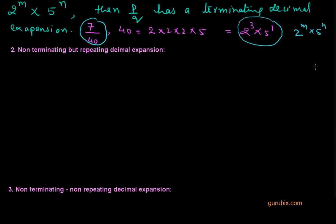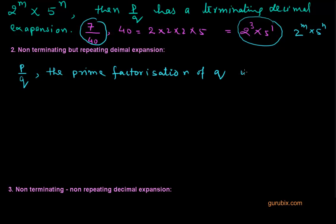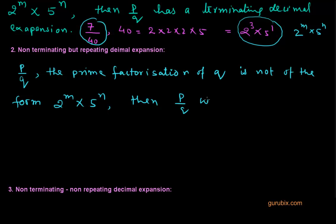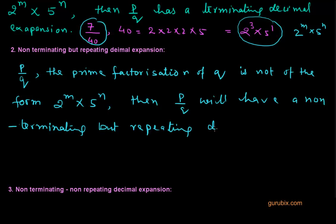Now let me come to the next part of this topic. Secondly, we have non-terminating but repeating decimal expansion. Suppose we have a rational number P over Q, and if we factorize Q, the prime factorization of Q is not of the form 2 to the power M multiplied by 5 to the power N. Then P over Q will have a non-terminating but repeating decimal expansion.